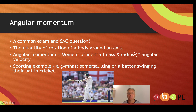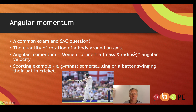Let's start by defining it. Angular momentum is the quantity of rotation of a body around an axis. The formula shows that angular momentum equals moment of inertia times angular velocity, and we'll have a chat about moment of inertia in the next slide.